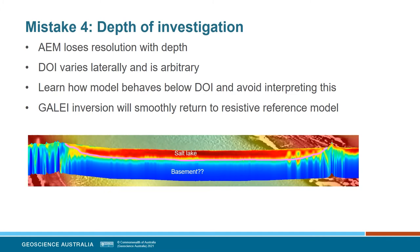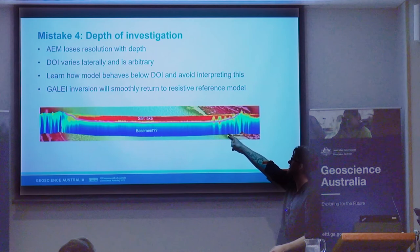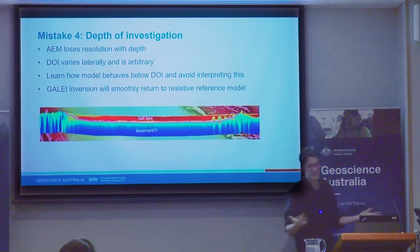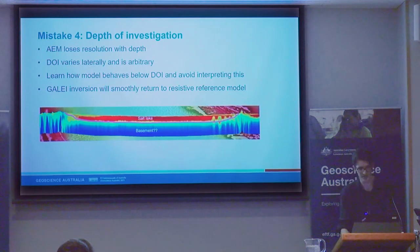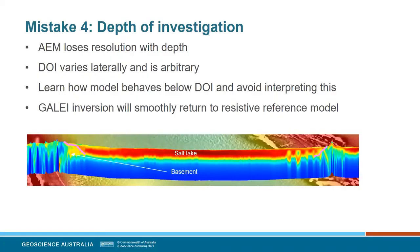Seb has already covered depth of investigation. We see this so frequently: GALEI has a reference model that is resistive, and when it runs out of resolution it will return to that — all models go to this eventually. So it's very natural to put a base of the conductor at that point, but you really have to understand where your depth of investigation is. That interpretation is probably unjustified. A less pleasing but better interpretation acknowledges this uncertainty.